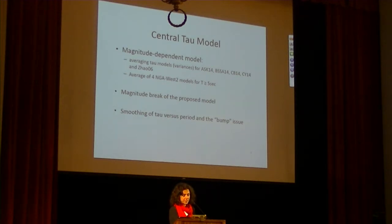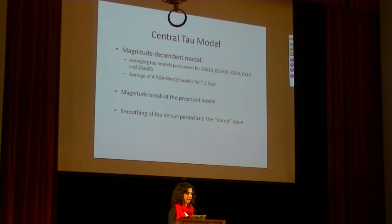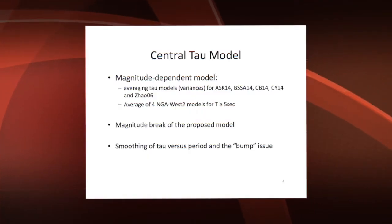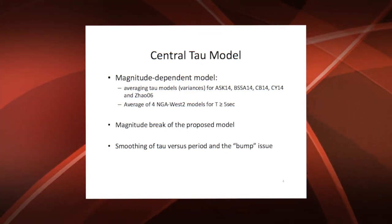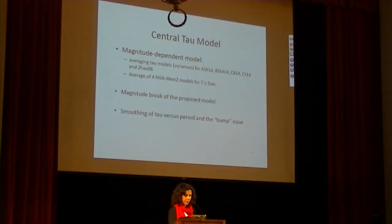We average the variances for ASK-14, BSSA, CB, CY, and Zhao — averaging only NGA West 2 models for periods beyond five seconds, because Zhao does not go to long periods. The two things I will discuss are the magnitude break of the proposed model and the smoothing of tau versus period.